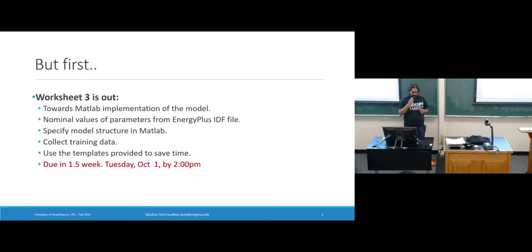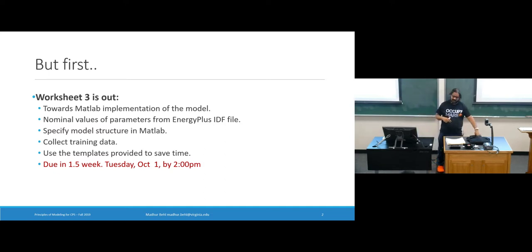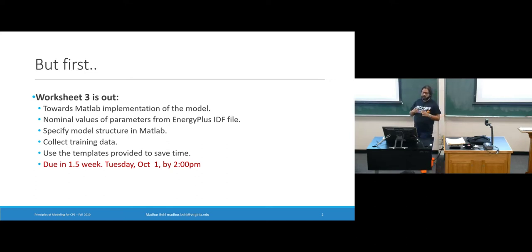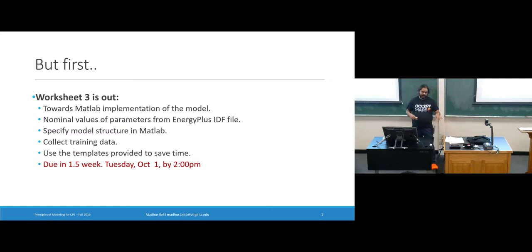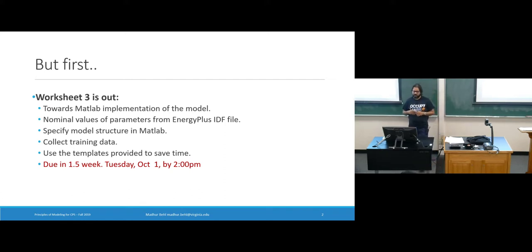The next assignment is already out — don't panic. I know you've been submitting assignments every week, but this one you have a little more time. It's not due next Thursday; it's due in one and a half weeks, or three lectures from now rather than the usual two. When you grab a hard copy, the due date written there is incorrect — I'm giving you another weekend, so you have two weekends basically to complete this.